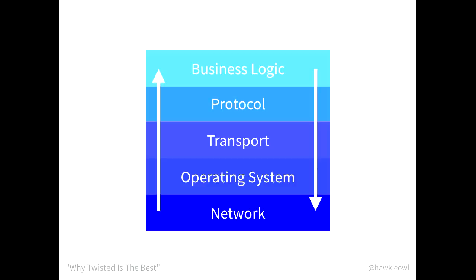Here are essentially the layers that Twisted deals with. Right at the top you have your business logic, which is the stuff you actually care about. Then you've got the protocol, which is the data that comes in from the network. Then you've got the transport, which is how it gets to the network. Then you've got the operating system, which does it for you because your application isn't actually directly talking to the network card. And then you've got the network itself.